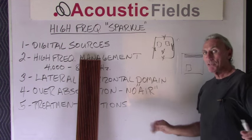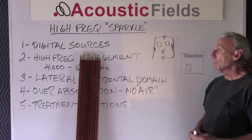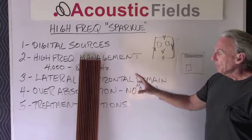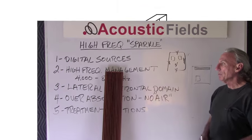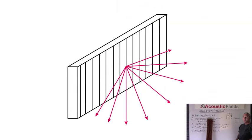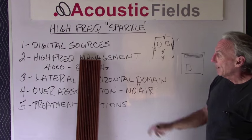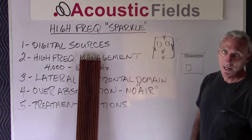Sounds a little confusing — if you have any questions, just call us and we'll be able to help. Higher frequency diffusion: as you can see, we don't want to overdamp, and we have options in the higher domains of our listening environment to address that. We have a tool — quadratic diffusion. We don't need lower frequencies; we need frequencies that match the problem areas we have.